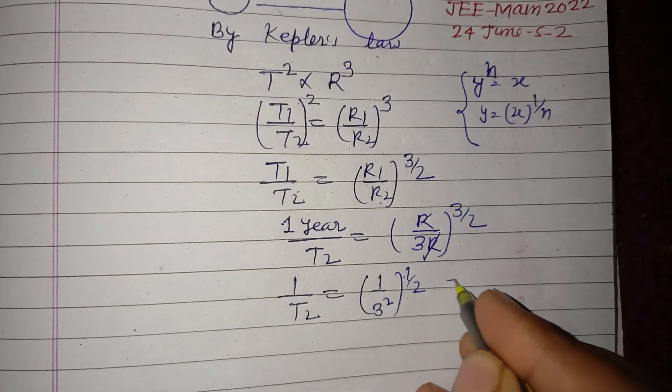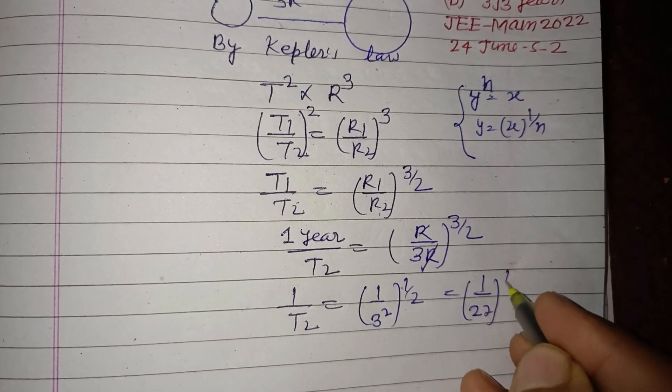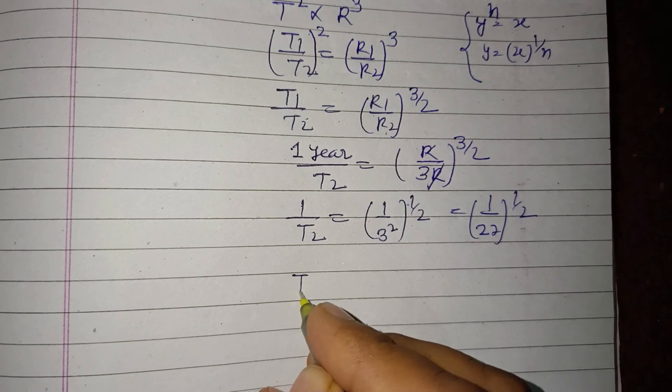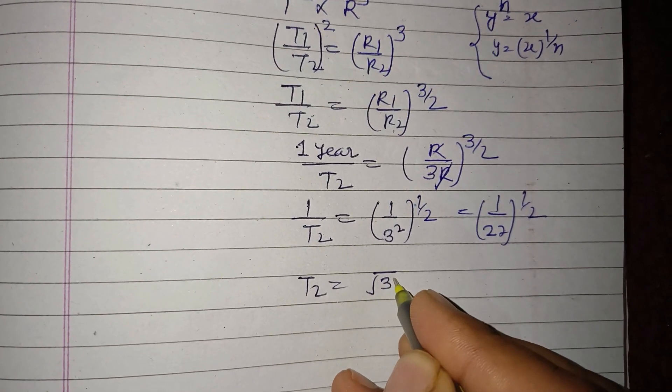So this is 1 upon 27 to the power 1/2. Therefore, T2 equals square root of 27.